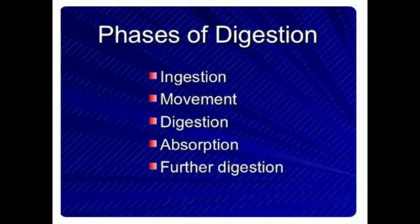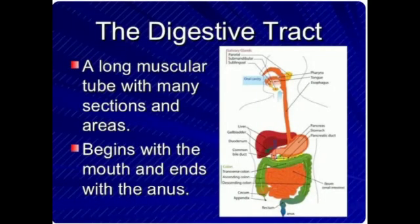Now, the phases of digestion: ingestion, movement, digestion, absorption, and further digestion. The digestive tract is a long muscular tube with many sections and areas, beginning with the mouth and ending with the anus.